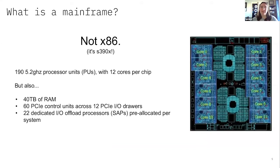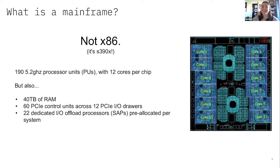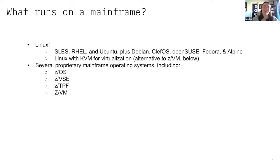The point of this architecture is that it's really good at processing data because it has big caches in the CPU. In a fully loaded four-frame machine like we saw a picture of, there are 190 5.2 GHz processors, each processor has 12 cores, and the machine itself has 40 terabytes of RAM. Then you've got all those PCIe drawers with offload processors. There are tons of really cool pictures I can show you of the internals and all the cards — they're very pretty. But again, it's not x86, and that's important.